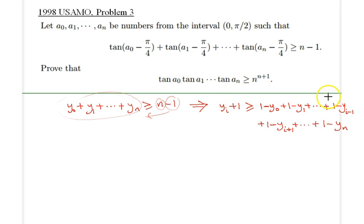Therefore, it's possible to represent all this on the right-hand side in summation notation. So y sub i plus 1 is greater than or equal to the sum of 1 minus y sub j, where j is not equal to i. That's the first important step.